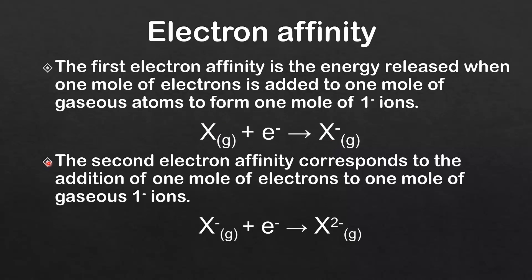The second electron affinity corresponds to the addition of one mole of electrons to one mole of gaseous one-negative ions. Here, one mole of electrons is added to one mole of gaseous one-negative ions to form one mole of gaseous two-negative ions.